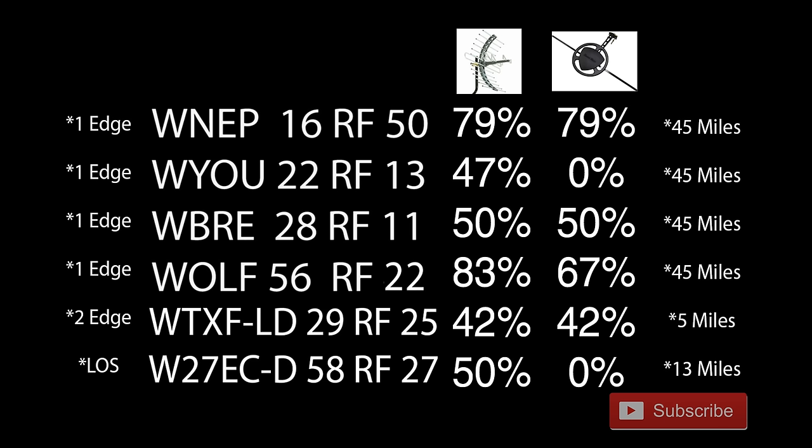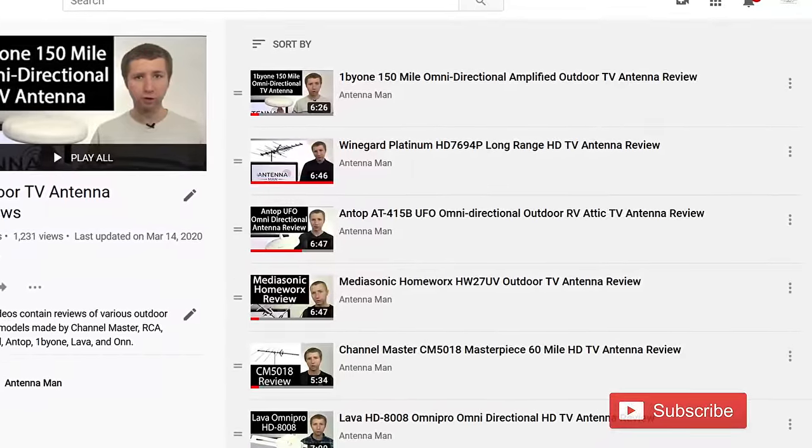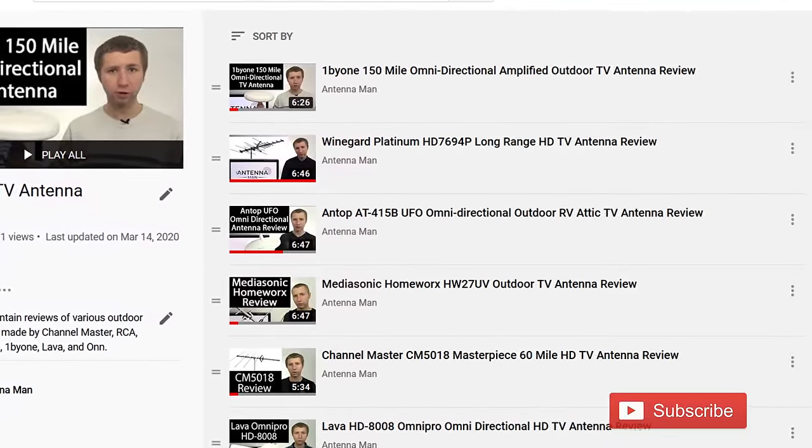Here's a list of the stations along with their RF channels and their signal strengths on the last two antennas I tested out on my YouTube channel. On the left side, you'll see the type of diffraction on the TV station. One edge means single edge diffraction or one ridge between me and the transmitter, weakening the signal. Two edge means two edge diffraction or two ridges weakening the signal between me and the transmitter. LOS means line of sight with virtually no obstructions in the way. You can also see the results of various other outdoor antenna models by checking out my other videos.